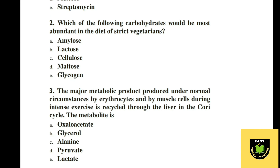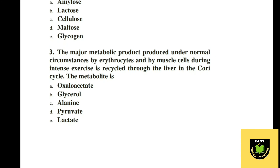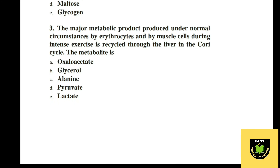Question 2. Which of the following carbohydrates would be most evident in the diet of a strict vegetarian? Options: A amylose, B lactose, C cellulose, D maltose, E glycogen. The correct option is C, cellulose.